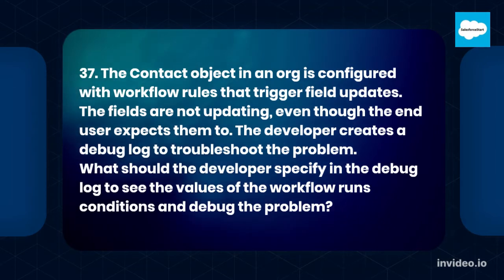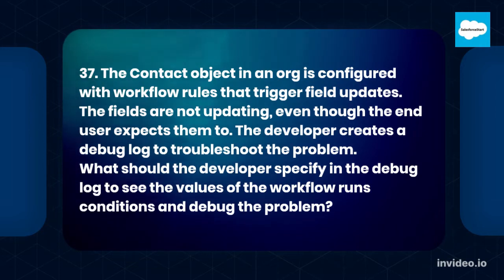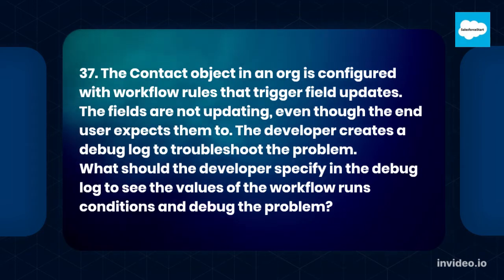Question 37. The Contact object in an org is configured with workflow rules that trigger field updates. The fields are not updating, even though the end-user expects them to. The developer creates a debug log to troubleshoot the problem. What should the developer specify in the debug log to see the values of the workflow rule's conditions and debug the problem?